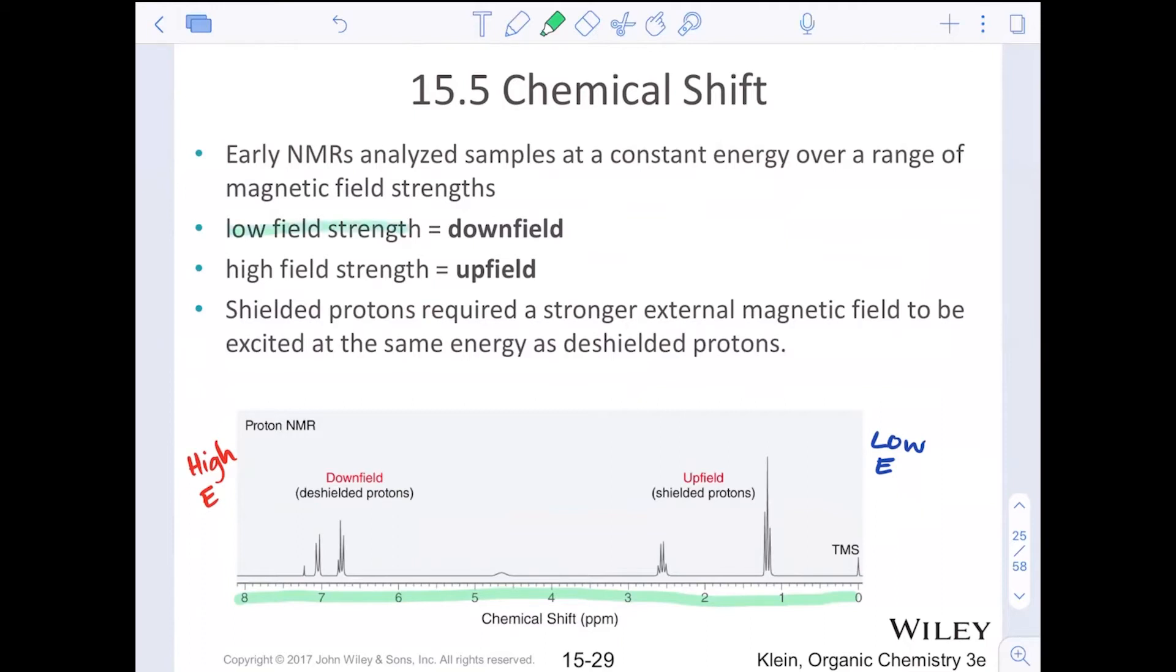Low field strength is what we call downfield. These downfield protons are the protons that appear on the spectrum far to the left of our screen. Now why they are downfield is because they are protons that are deshielded, meaning there's probably some sort of polar environment pulling electrons away from the nuclei.